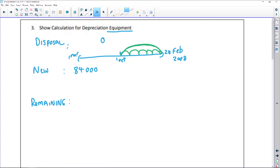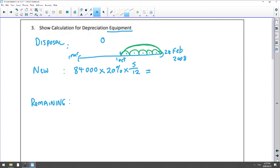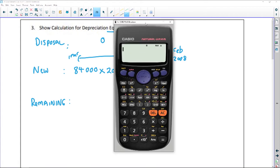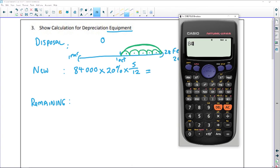So 84,000 times the rate of depreciation, which was given to us as 20%, times 5 over 12. My depreciation on new, let's do that quickly together: 84,000 times 20 times 5 divided by 12, and my depreciation is 7,000.